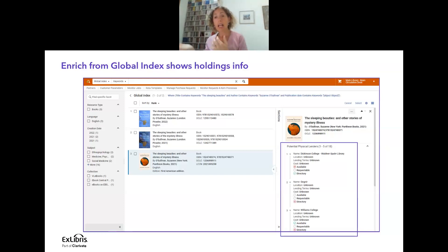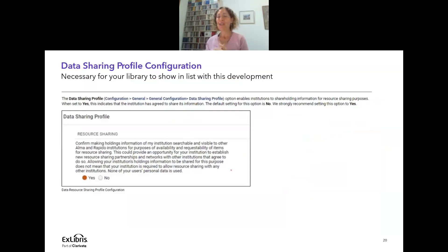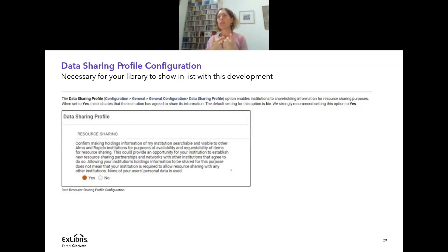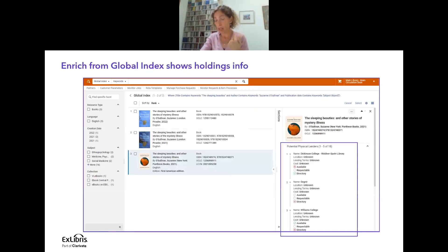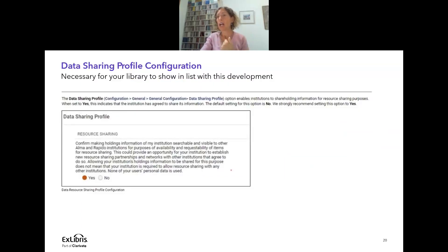Who appears in these results? It's based on the data sharing profile configuration. If you haven't set this to yes, go and do it — this has no implications and is needed by Rapido members and Alma institutions. We're talking a lot about enabling the visibility of holdings to Rapido institutions. Even if you're a Rapido library, you need to set this parameter to yes for your institution to appear under other institutions. You can find this under configuration, general, general configuration, data sharing.